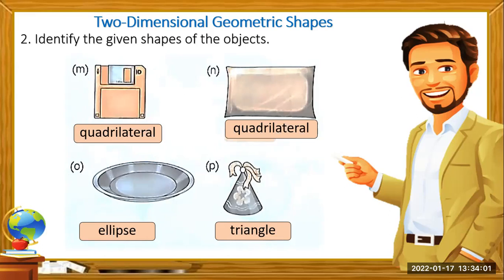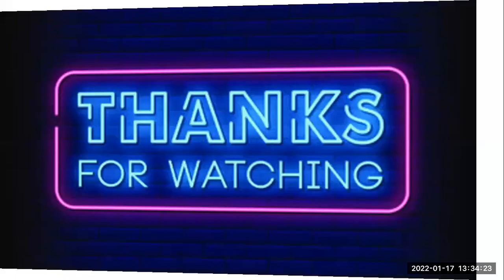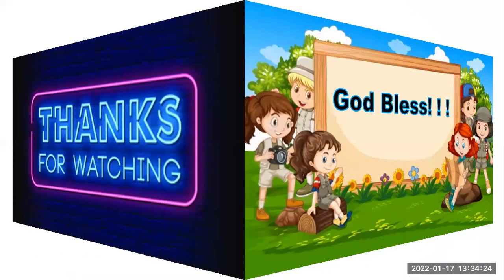Make sure you answer your book if you have one. If not, try to memorize the spellings and look at the objects around you — try to guess what two-dimensional shapes you see. That's all for this time. Thanks for watching this video, and God bless. Thank you.